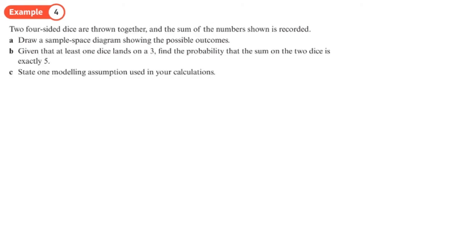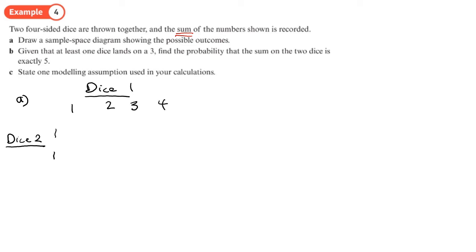Next example: you throw two four-sided dice together and the sum of the numbers is recorded. In part A, we draw a sample space diagram showing all possible outcomes. Dice one can show 1, 2, 3, or 4, and dice two can also show 1, 2, 3, or 4.